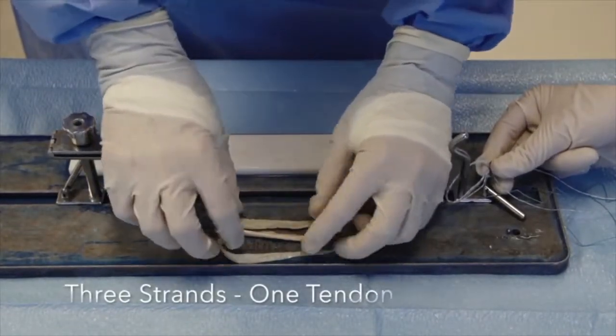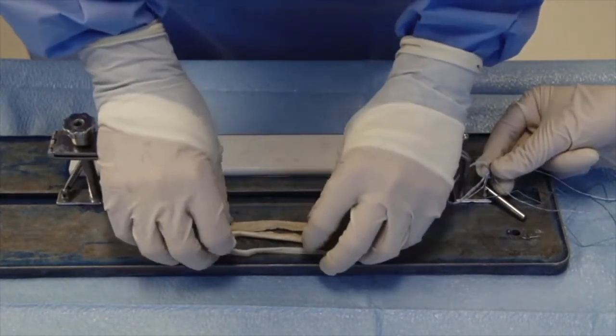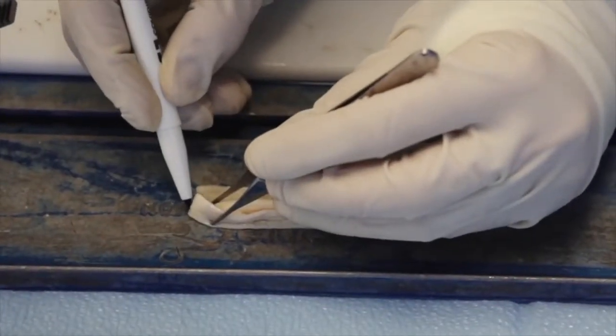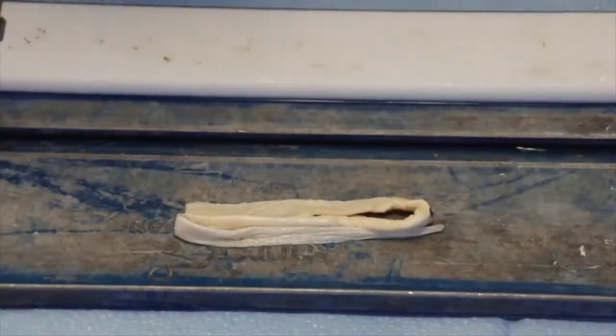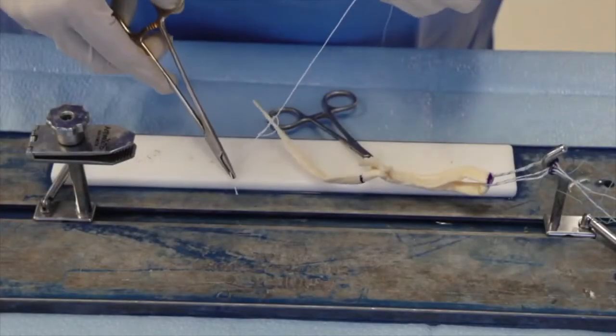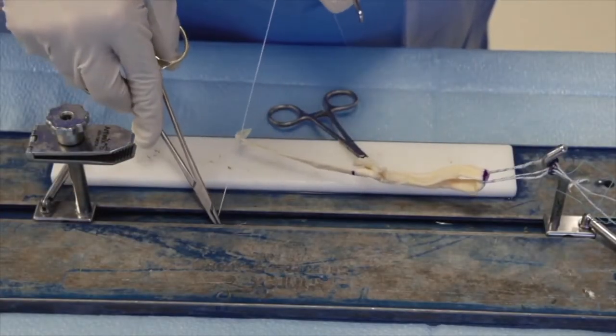We will demonstrate the three strand technique with one tendon. The tendon is folded into three equal parts and the junction at each fold is marked. The tendon is loaded into a suspensory device at one of the marks.